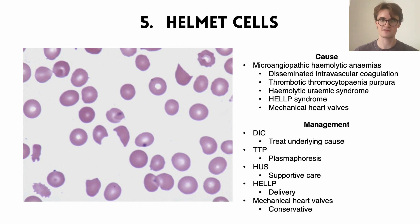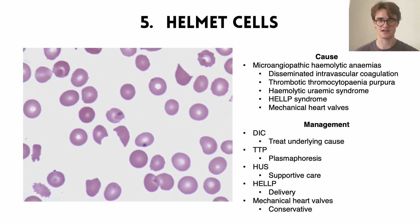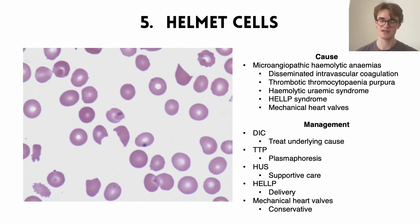There are five main causes of microangiopathic hemolytic anemias leading to helmet cells. First, disseminated intravascular coagulation (DIC) — a very severe dysregulation of the coagulation cascade. Second, thrombotic thrombocytopenic purpura (TTP). Third, hemolytic uremic syndrome (HUS). Fourth, HELLP syndrome — a complication of pregnancy. Fifth, mechanical heart valves, where the metal literally shears blood cells in half.